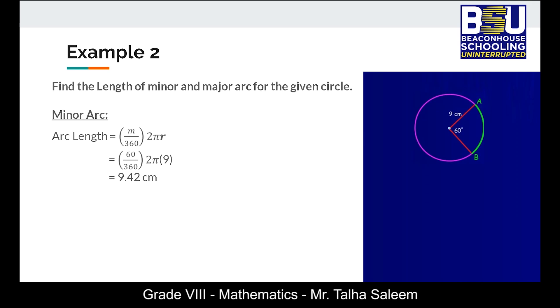Now the major arc has been colored purple and the angle of this major sector can be simply calculated by subtracting 60 from 360 degrees. Using the value of m as 300 and r will remain same as 9 centimeters. The formula for arc length is m over 360 into 2πr and the value we get for the major arc is 47.12 centimeters.